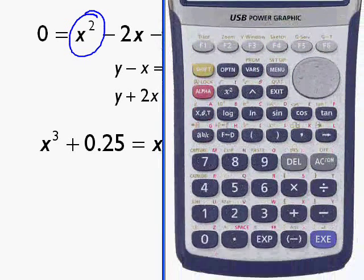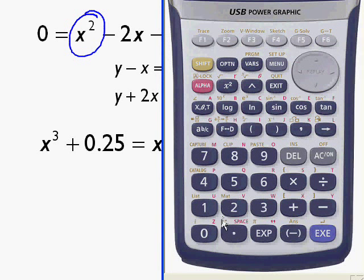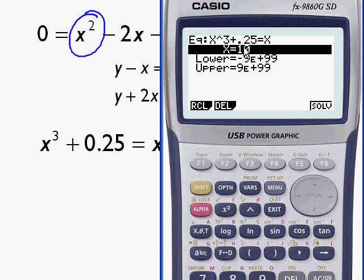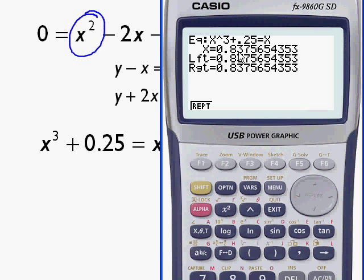X cubed plus 0.25 equals... Now the equals sign on my calculator is here. Look for it. It is going to be a yellow one. And shift. So I'm going to go shift point. And I get my equals sign. Equals x. Run that. Now this is not the answer. You press enter. You have to press solve. And I've got an answer. 0.838.